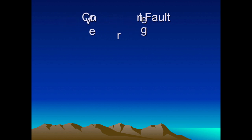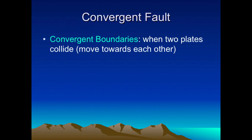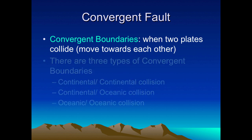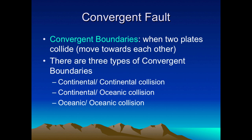Now let's go into the biggest one: convergent boundaries. Convergent is when two tectonic plates collide — they move toward each other. Because there are two different types of crust, there are actually three types of convergent boundary: continental-continental, continental-oceanic, and oceanic-oceanic.